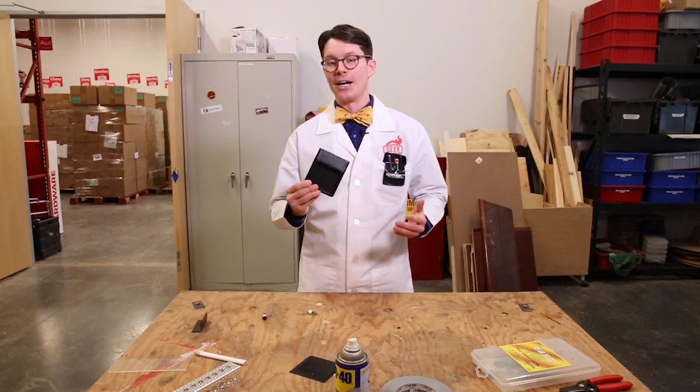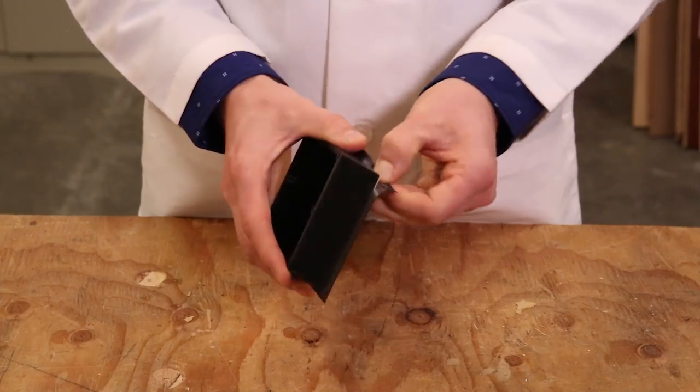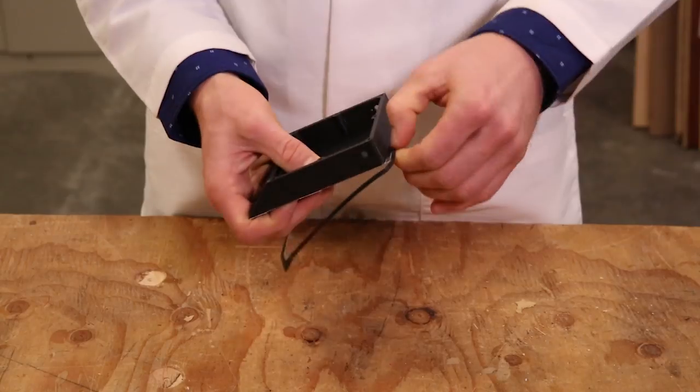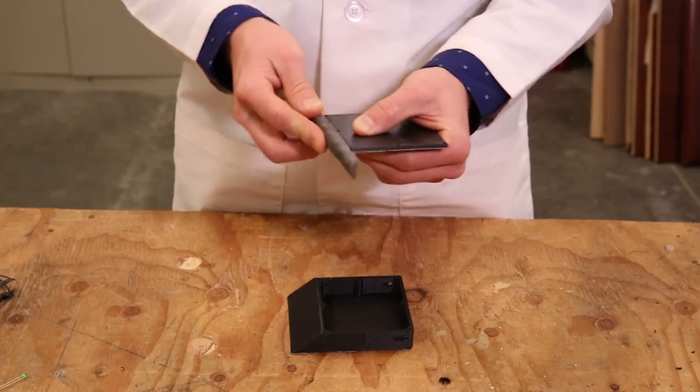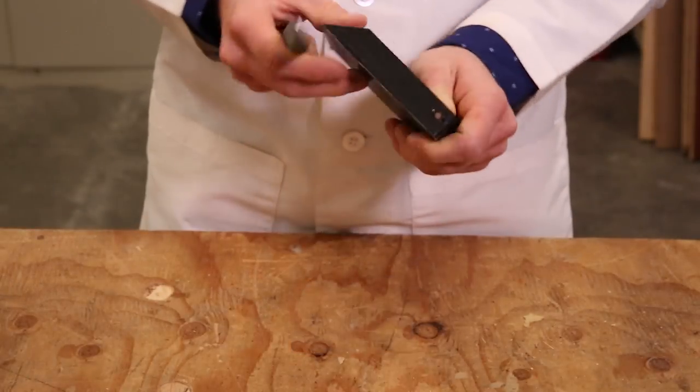Now that the 3D print is done, there's three things we need to do before we can start building our electronics. The first is we just need to peel off this brim as it gets in the way of our wheels. After peeling off the brim, the edges look a little rough, so you can use some sandpaper or a file to take those down.